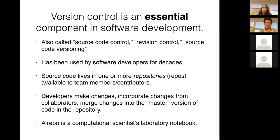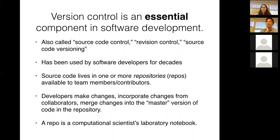Version control — also called source code control, revision control, or source code versioning — refers to the storage of software code in repositories that are available to all contributors, shared, and whose contents are controlled and labeled by version numbers. It's been used by software developers for decades. The idea is that you put your source code somewhere everybody can get to it, and the process of making changes is controlled in a way that allows everybody to share those changes and work with a consistent version of the code.